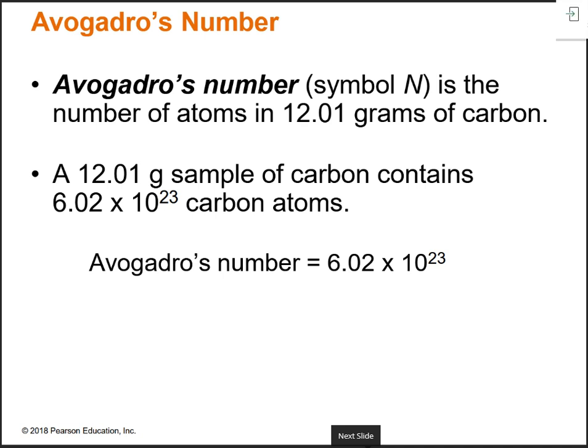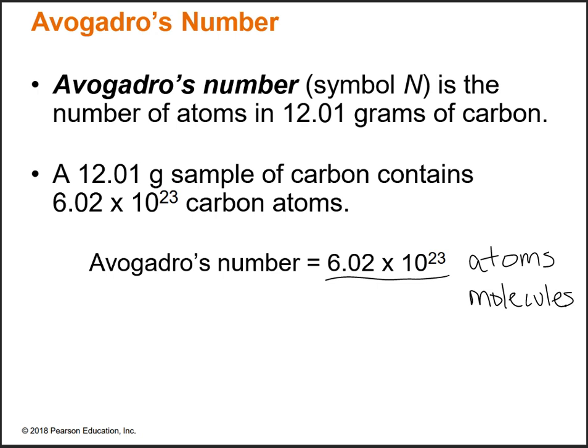So, Avogadro's number. Avogadro's number is really, really big. It's 6.02 times 10 to the 23rd. It's just a way of counting things — it could be atoms, it could be molecules. There's Avogadro's number of atoms or molecules in one mole.